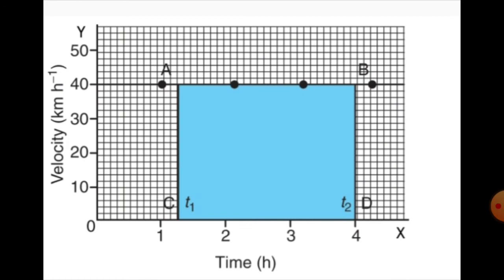We know that the product of velocity and time gives the displacement of an object moving with uniform velocity. The area under the velocity-time graph is equal to the magnitude of the displacement.